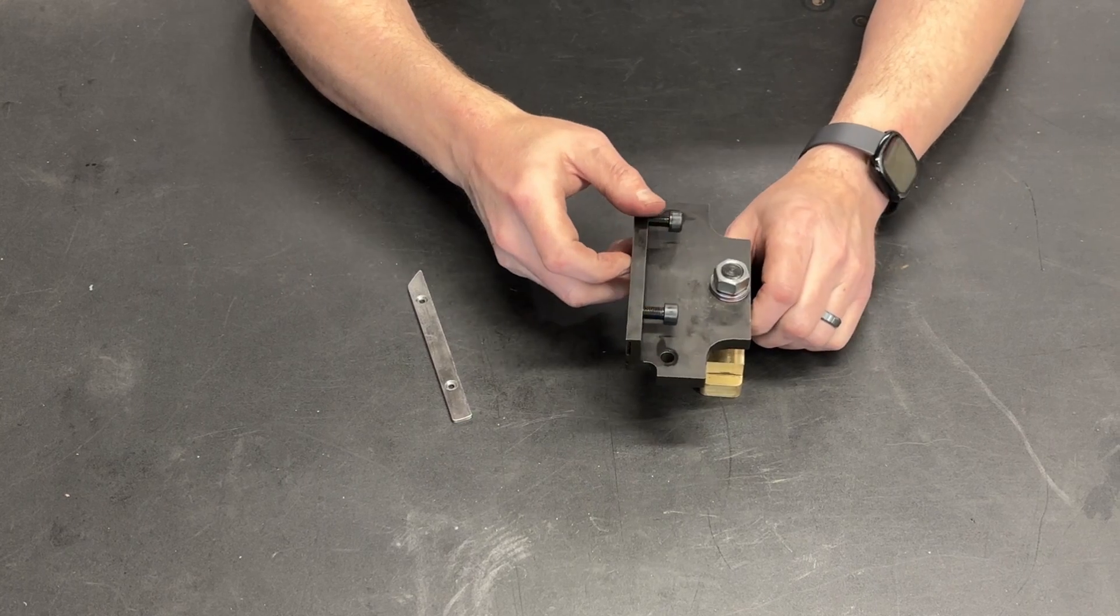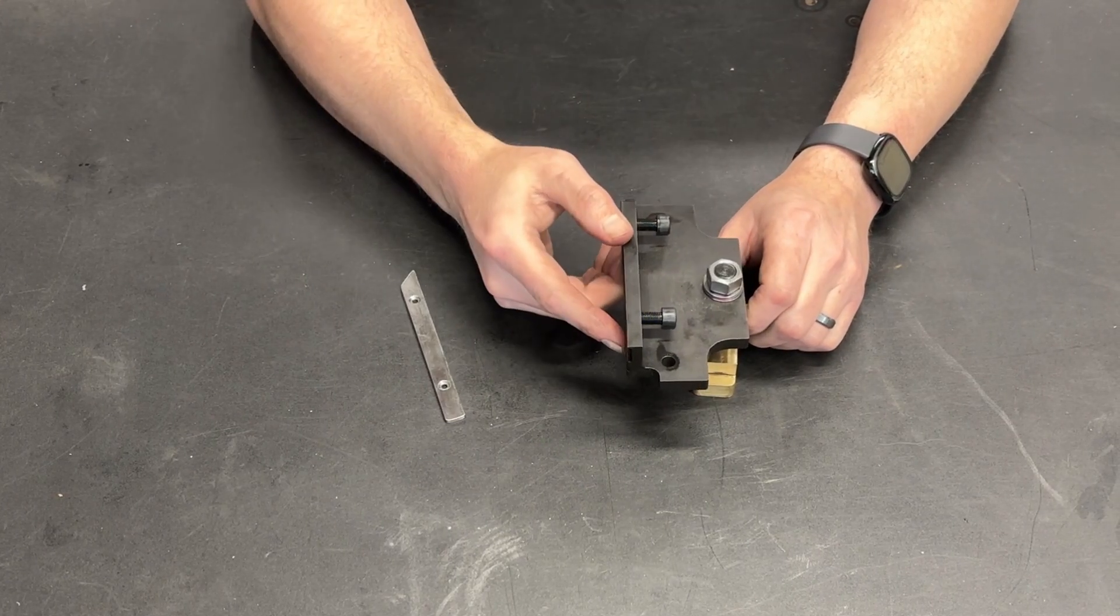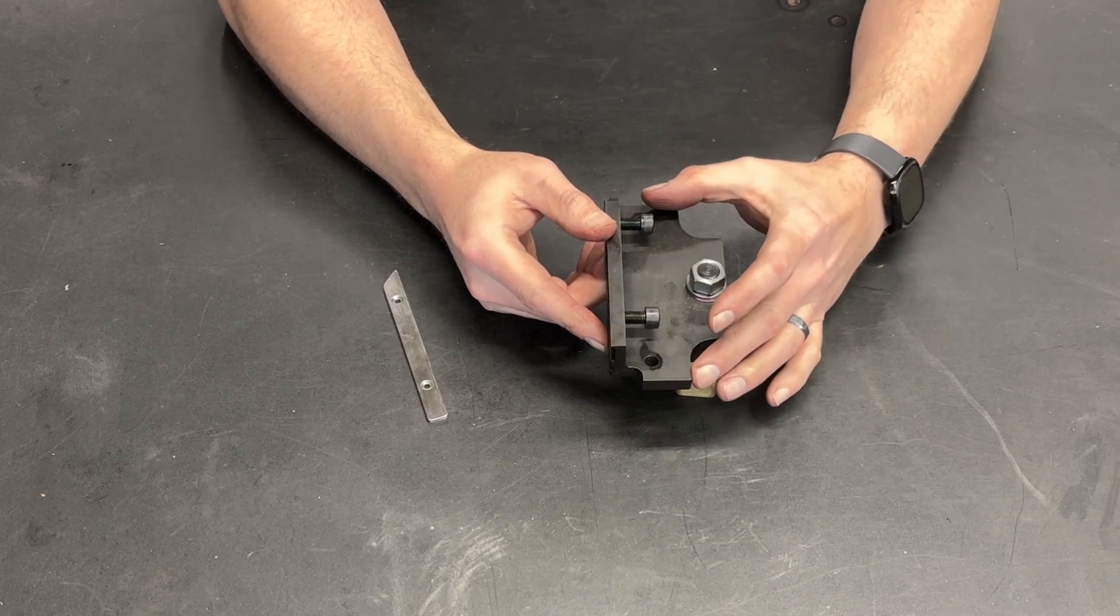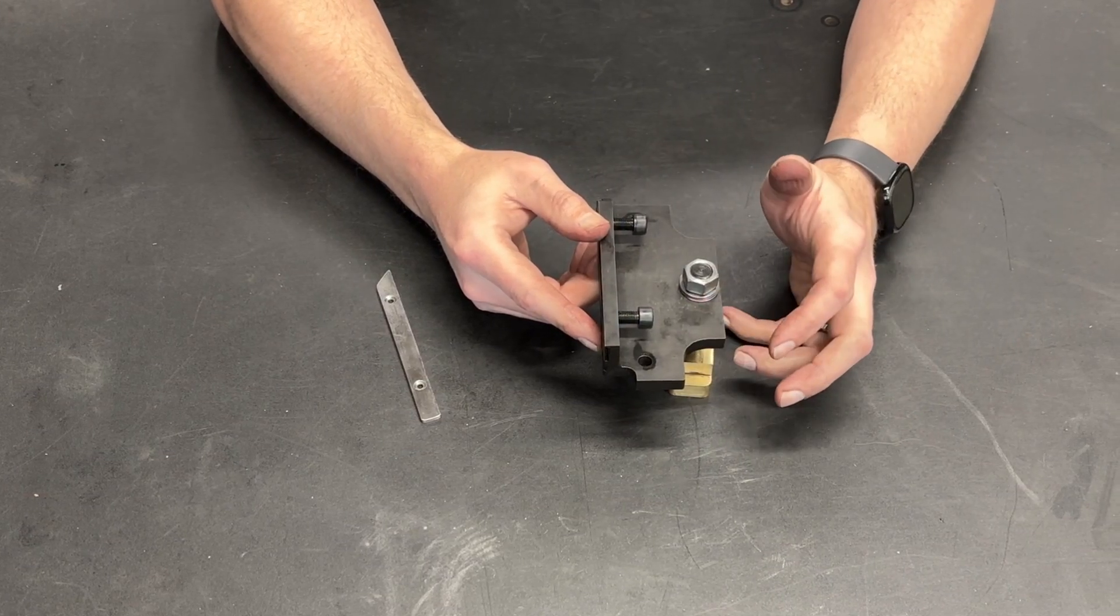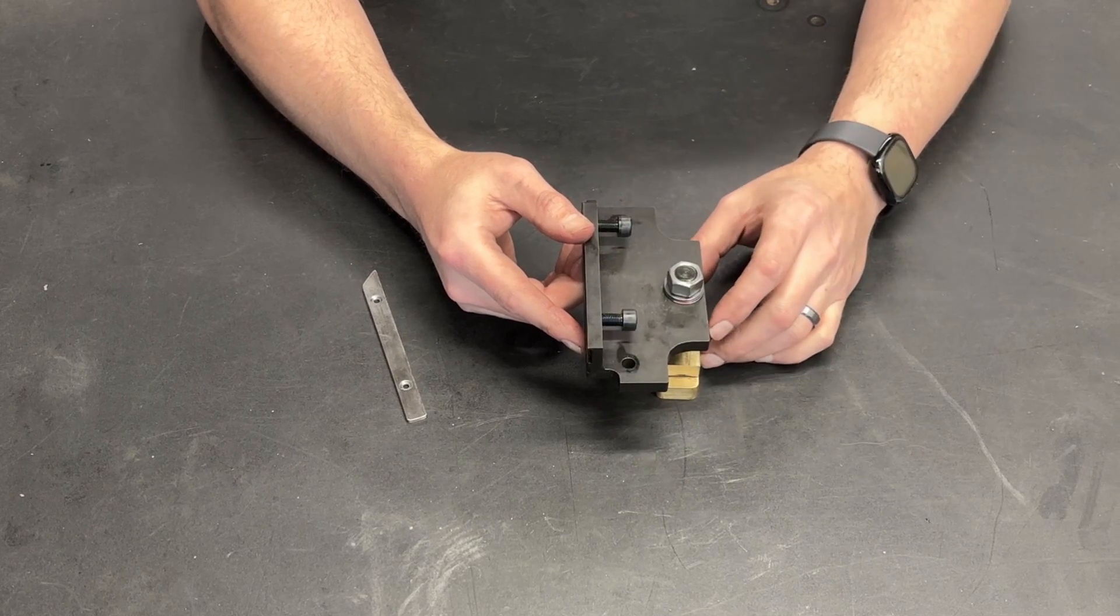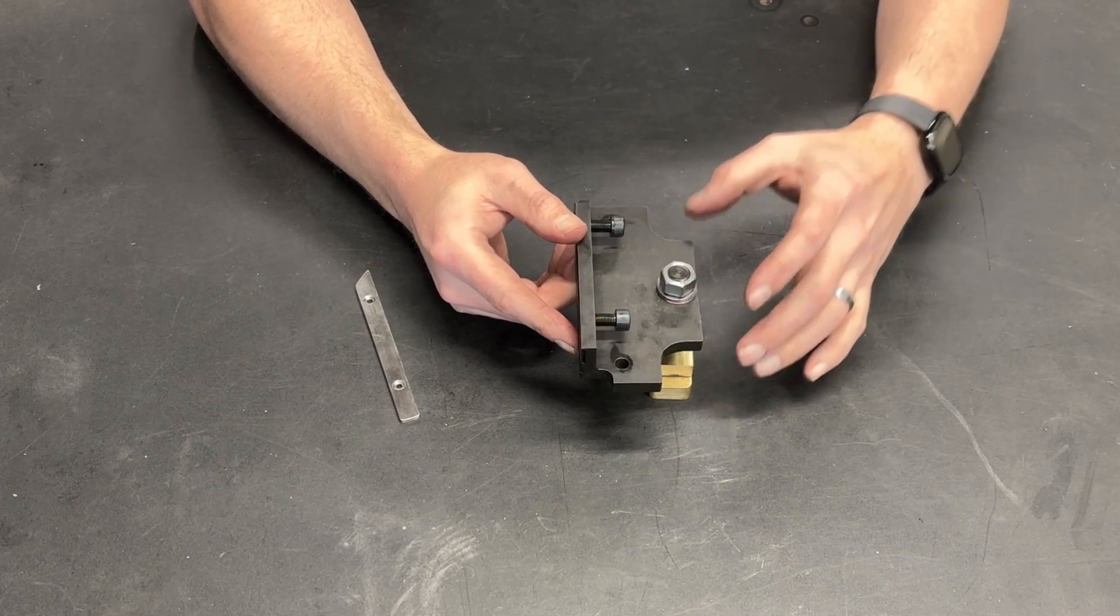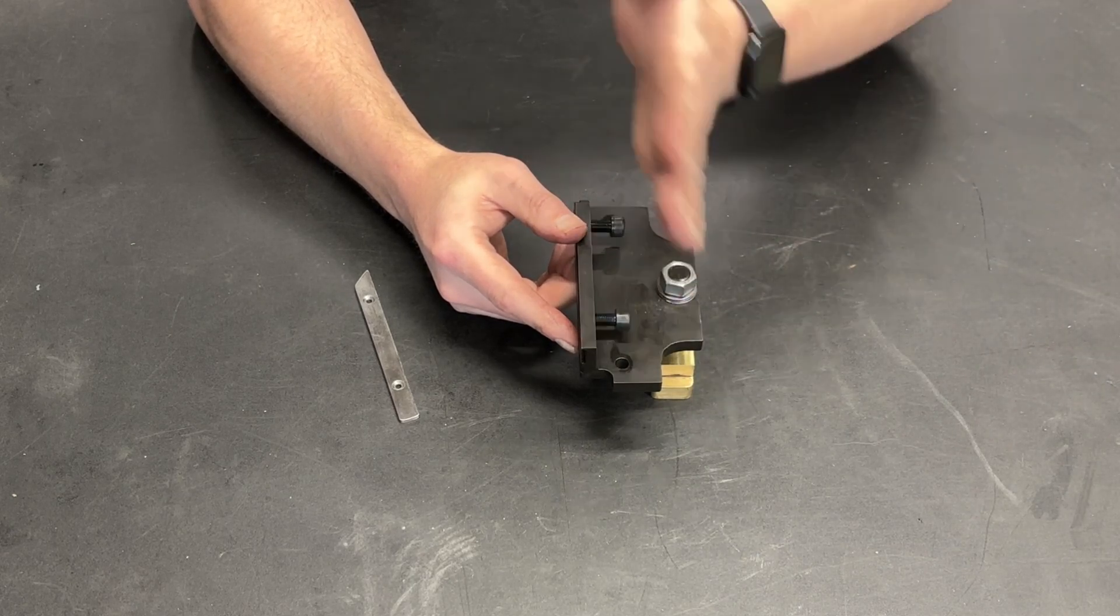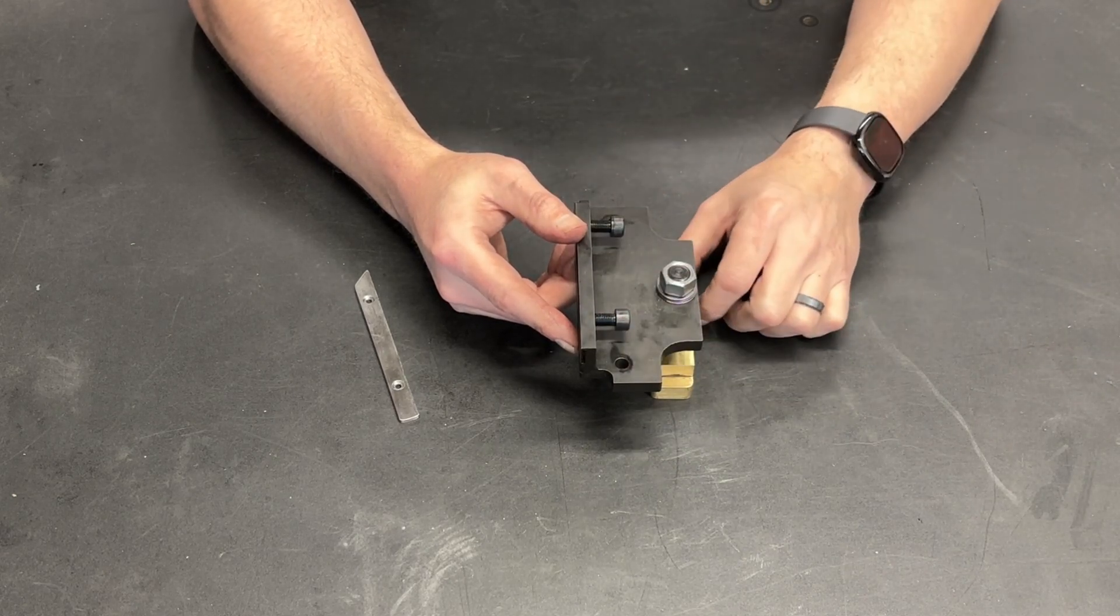This fits in place of the follower rest that came with my lathe. There are two factory mounting holes drilled and tapped in the carriage that I was able to bolt this in and use it to lock. The main axis is being locked with this, and the cross-feed axis is being locked right here.